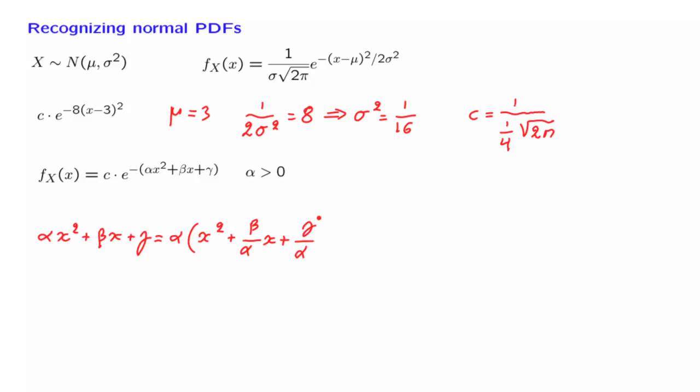And then we will try to make this expression here appear like a square of this kind, like a perfect square. So what is involved is a certain method, a certain trick, called completing the square.